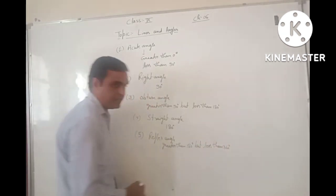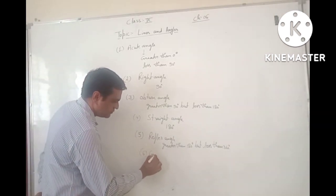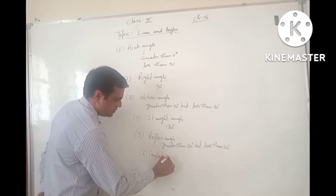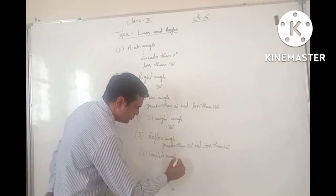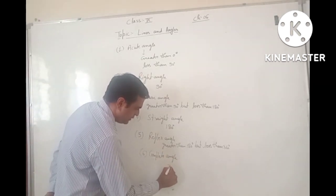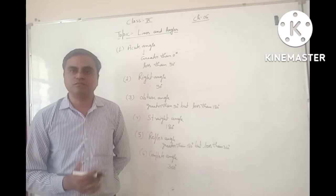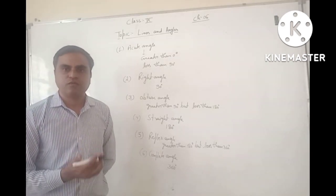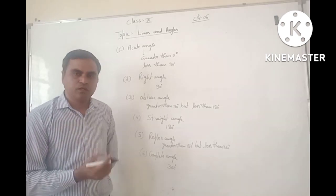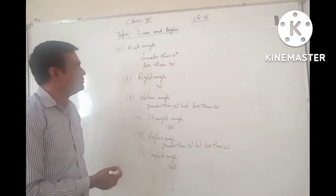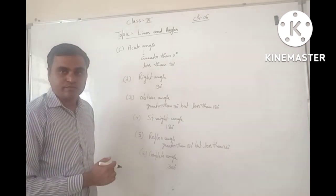And, the last is Complete Angle. Complete Angle is 360 degree. In the angles, we have to write the degree as degree. This is known as Unit.